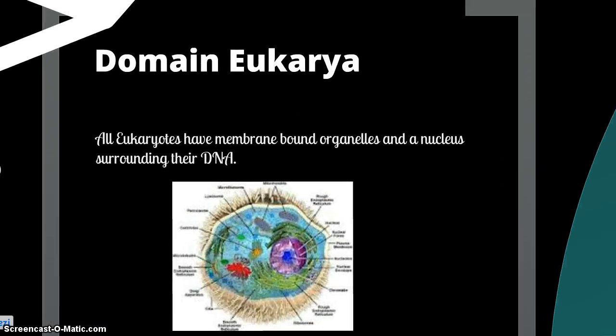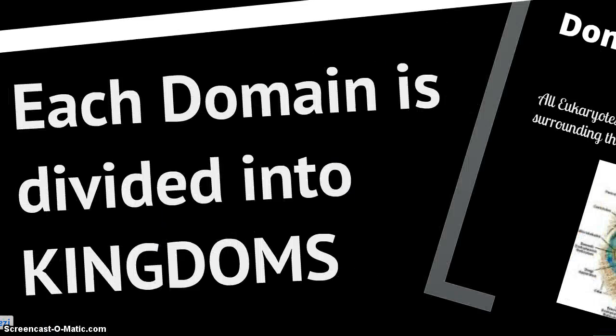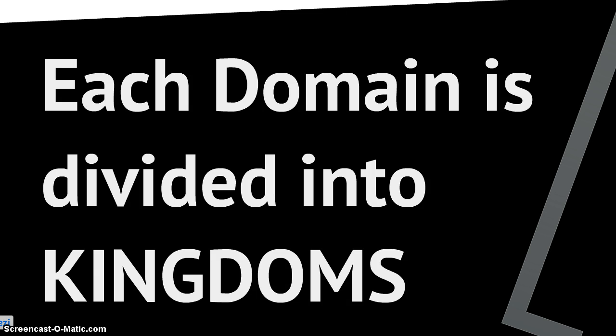The third and final domain, and the most complex, is the Eukaryotes — the domain Eukarya. All eukaryotes have membrane-bound organelles and a nucleus that surrounds their DNA. These are the three first classifications: the domains. Each domain is divided into kingdoms.